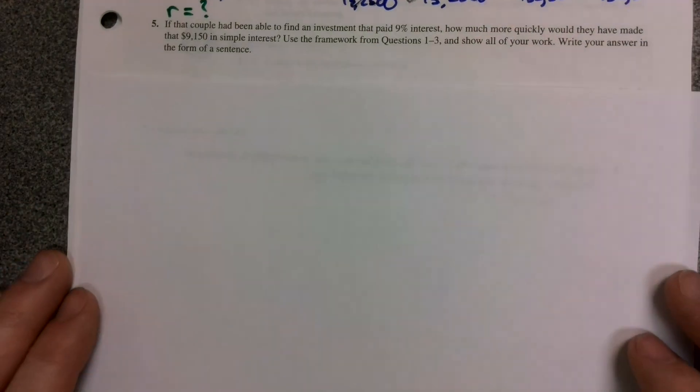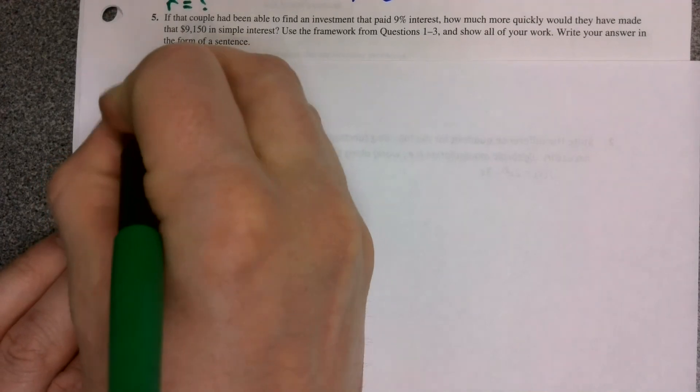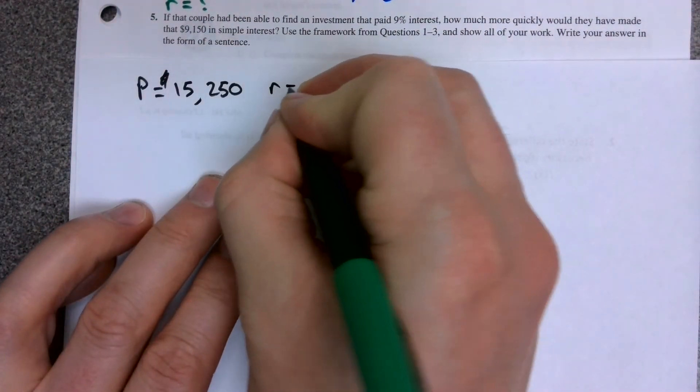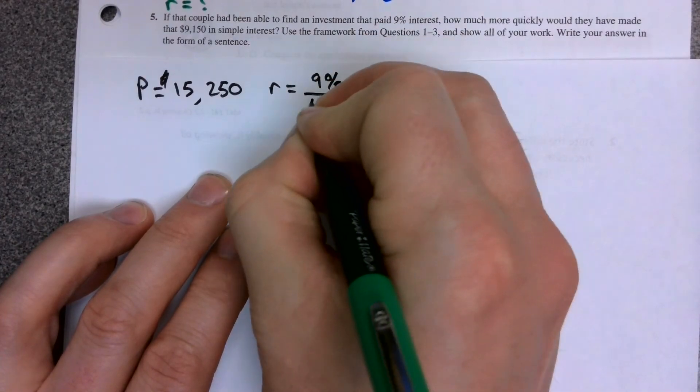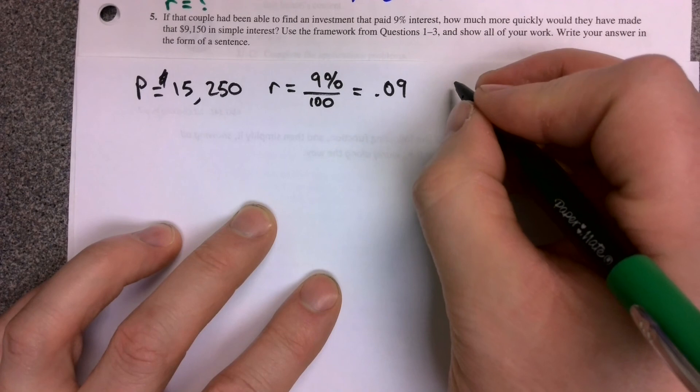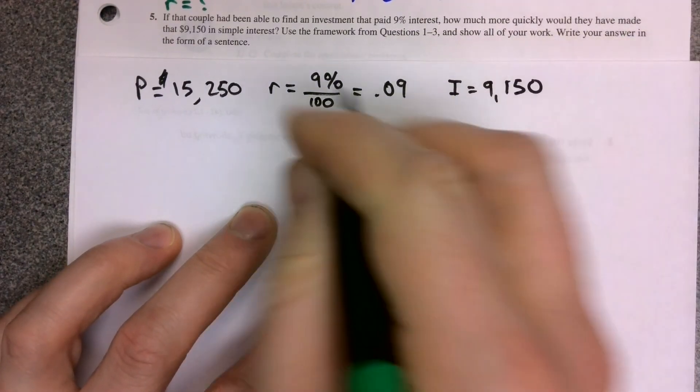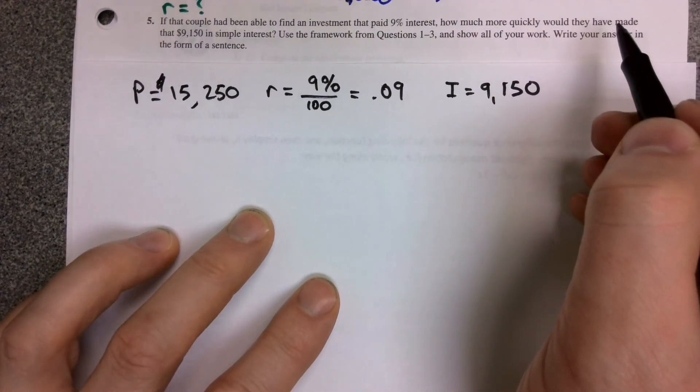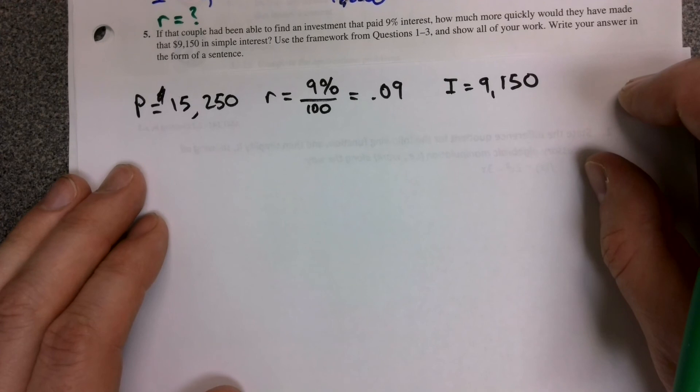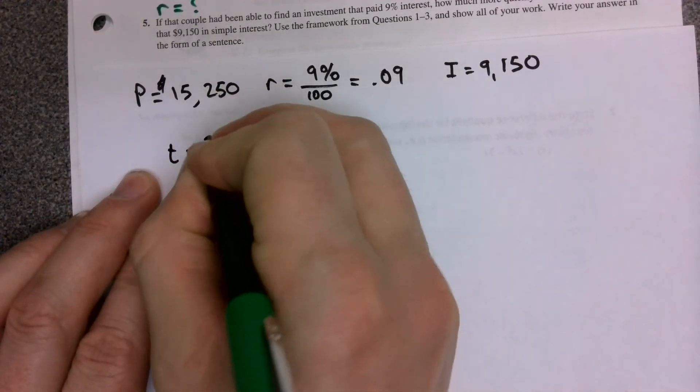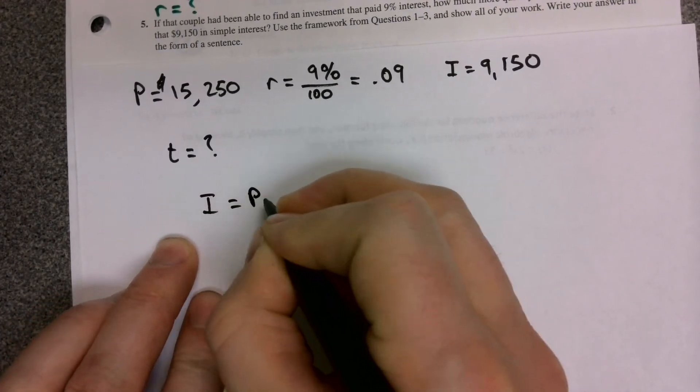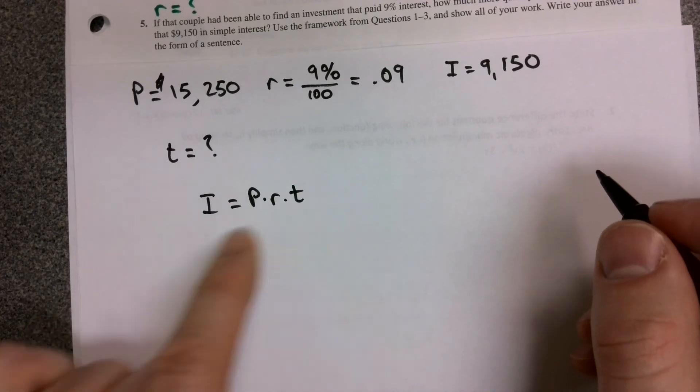Question five takes the same information. Let's assume the couple had the same principle, the same $15,250 that they could invest. And now they actually found a better investment and they earned 9% interest. Recall that 9% as a decimal is 0.09. And we want to know, how long would it take to earn an interest of $9,150? If you read the question carefully, it says, how much more quickly would they have made that $9,150 in simple interest? Recall that under the previous problem, they had invested the money for 10 years. So what we're looking for now is what's the new time, and then we'll compare that to the original 10 years to see how much faster it was.